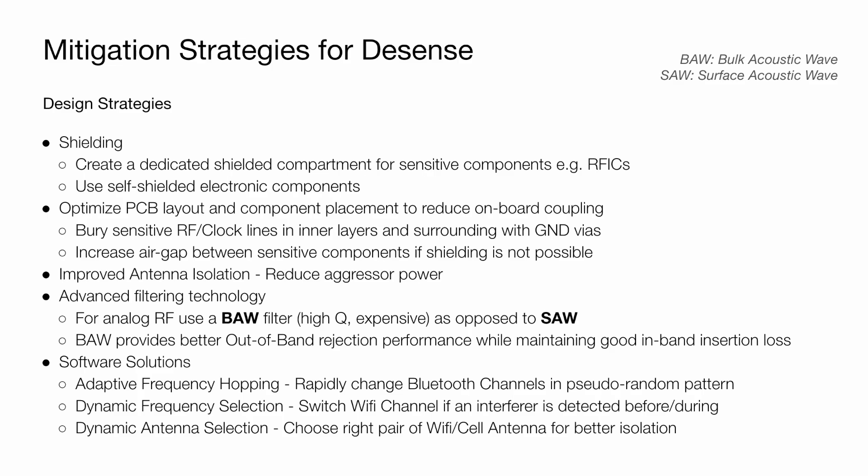Improving antenna isolation is another good approach specifically for coexistence scenarios, as it can help reduce the aggressor power as seen in previous examples. For the RF front-end specifically, using advanced filtering technology is beneficial — for example, using a BAW filter as opposed to SAW. BAW is a 3D filter whereas SAW is a 2D filter in terms of acoustic wave operation. BAW, being of high quality factor, can provide better out-of-band rejection while maintaining good in-band insertion loss.